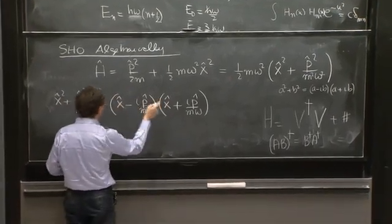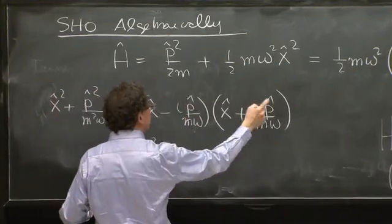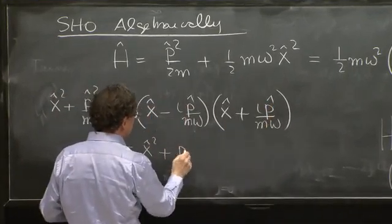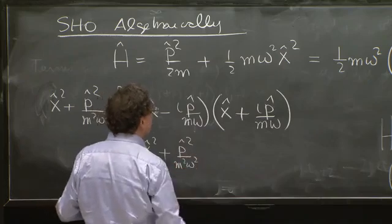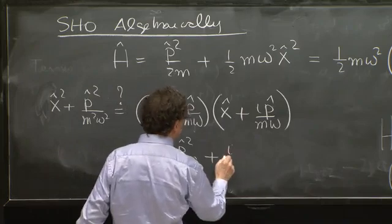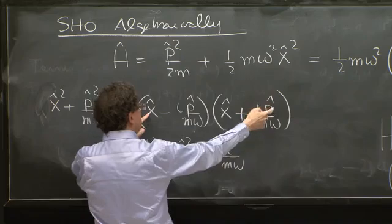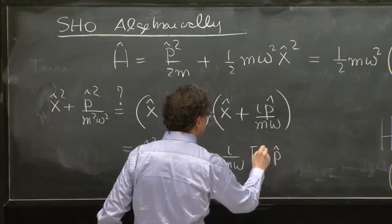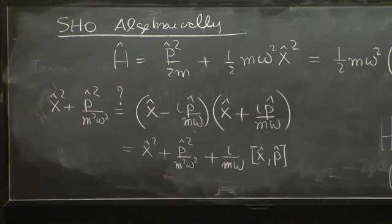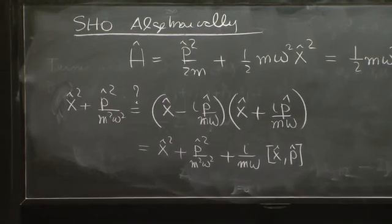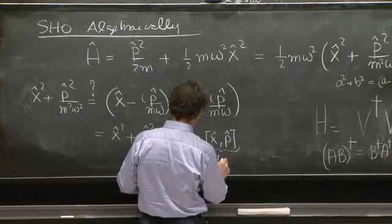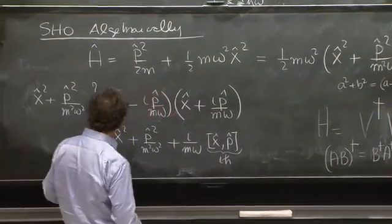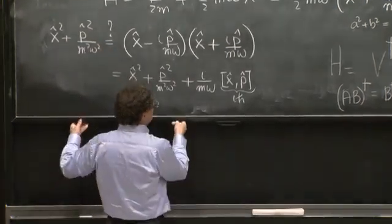So what is this? This x with x, fine, x squared. This term p with p is correct, plus p squared over m squared omega squared. But then we get plus i over m omega x with p minus p with x, so the xp commutator. So factorization of operators in quantum mechanics can miss a few constants because things don't commute. So the cross terms give you that.